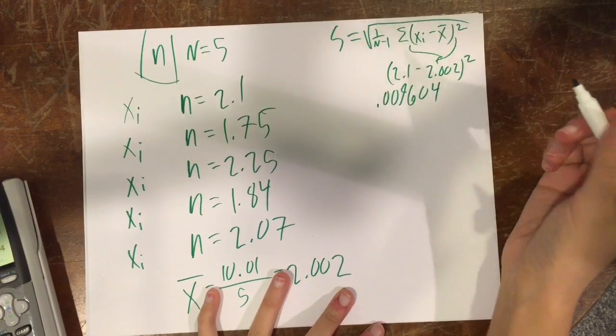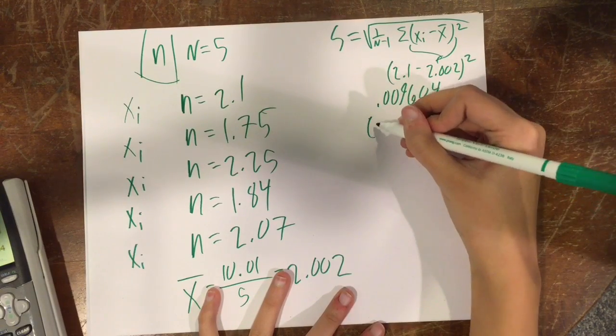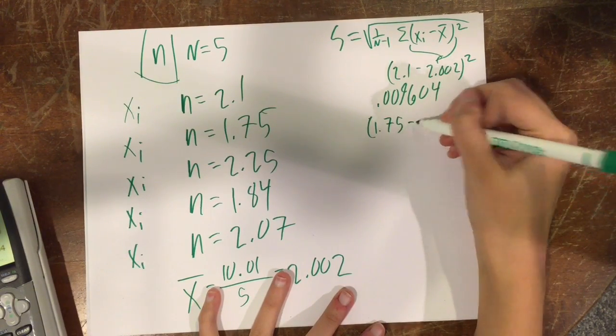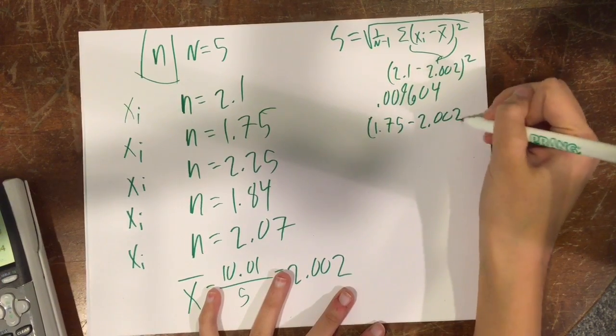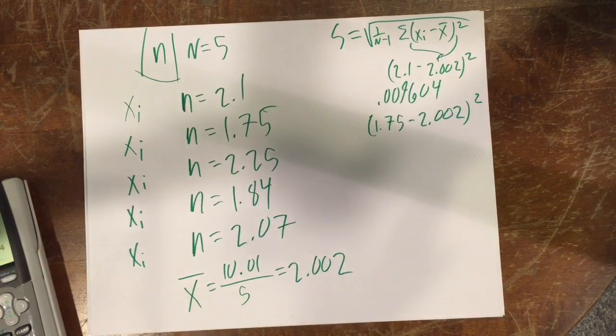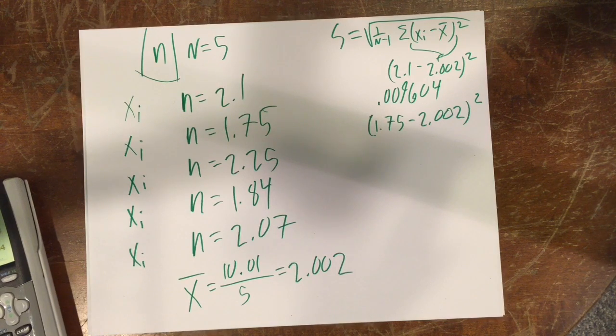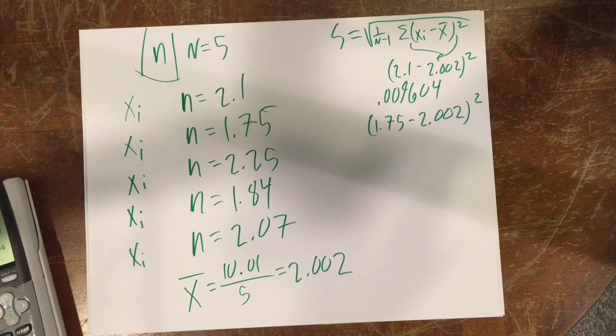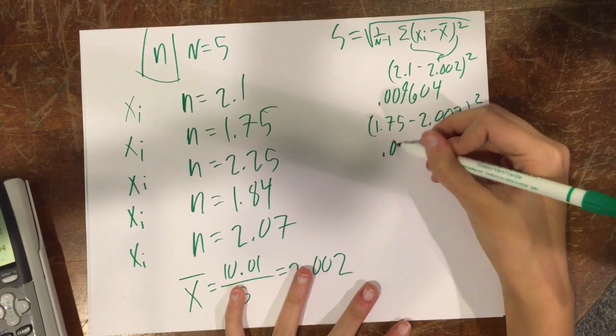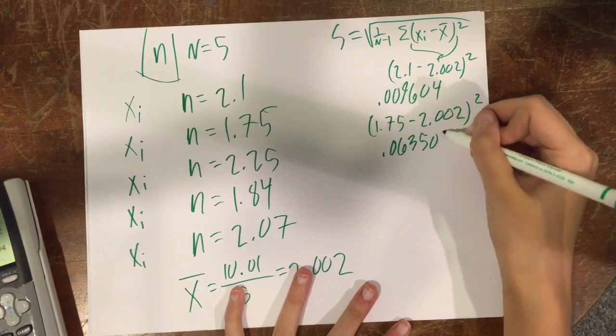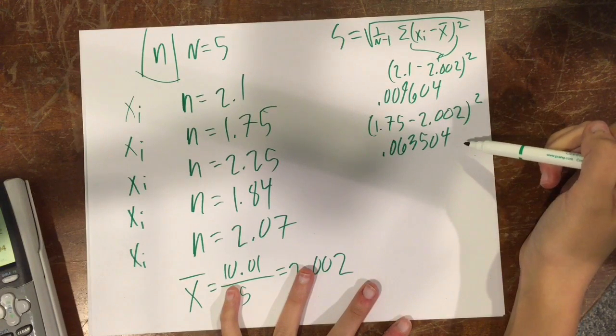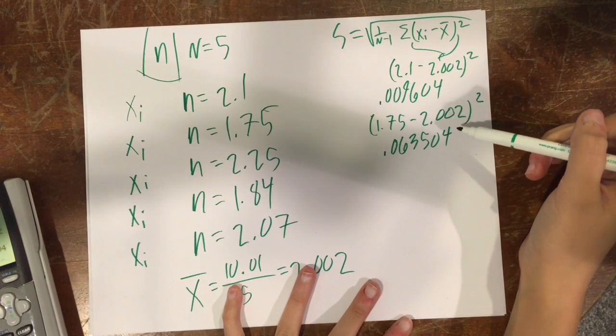You're then going to do this section again, but you are going to put in another data point that you have. So we'll go with the second one, for simplicity's sake. And that will come out to another number, shockingly enough, 0.063504. You'll notice these are always positive because they're always squared. That makes things just easier.